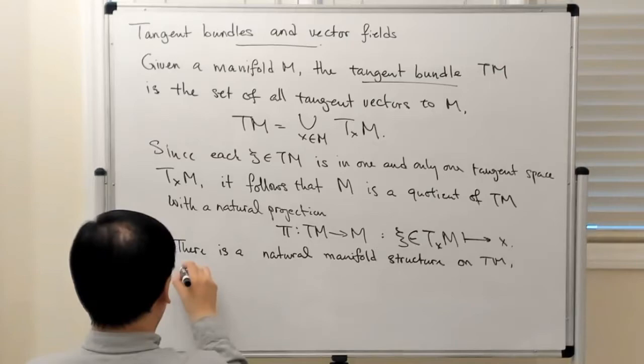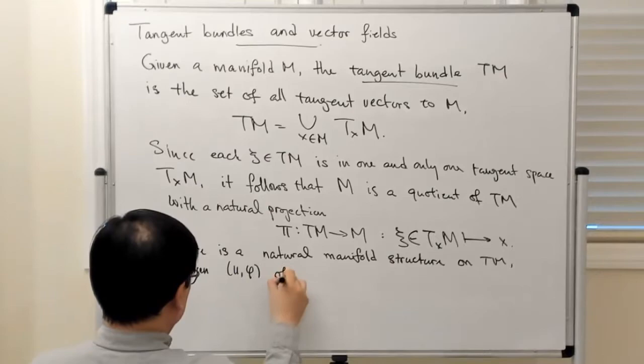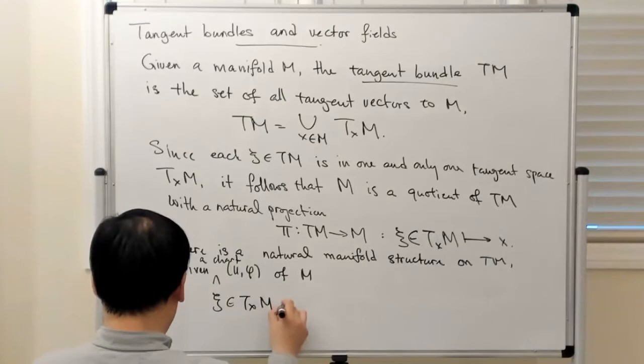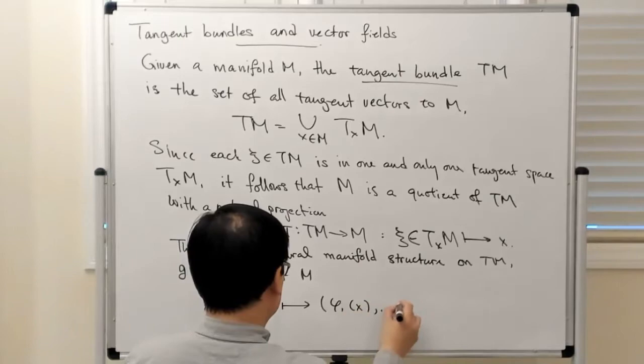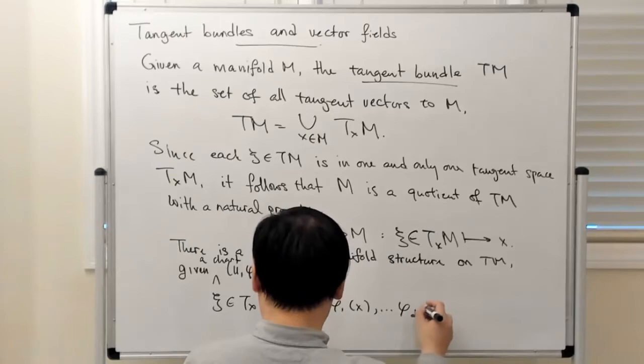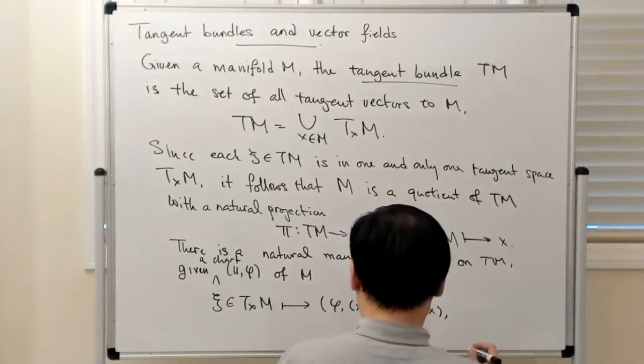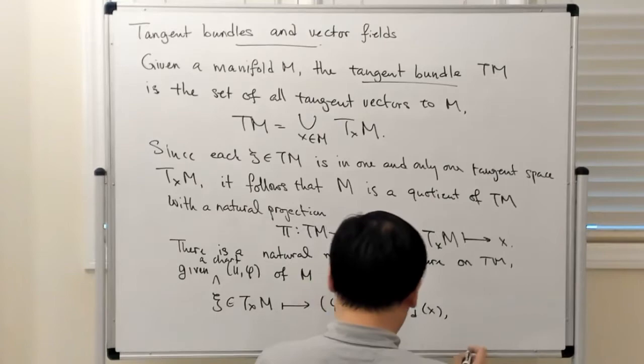So given some chart of M, what I'm going to do is take this chart and map it to the coordinates of the base point — with the dimension of the base manifold M — and then take essentially the directional derivatives of the components of the coordinate chart.